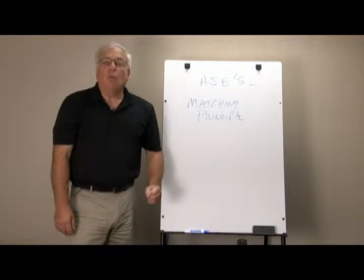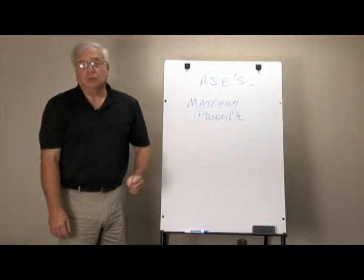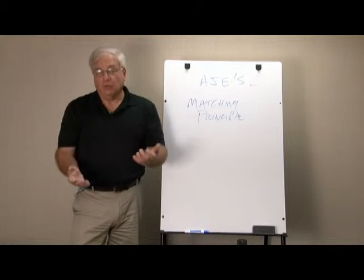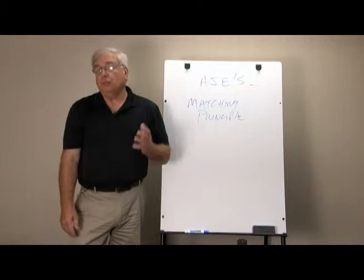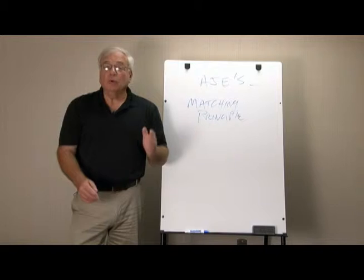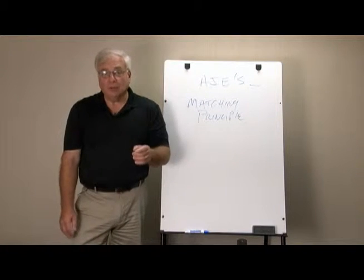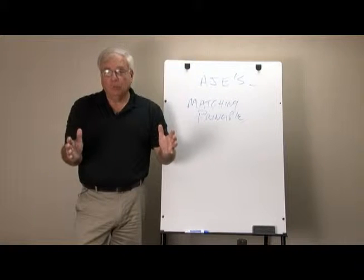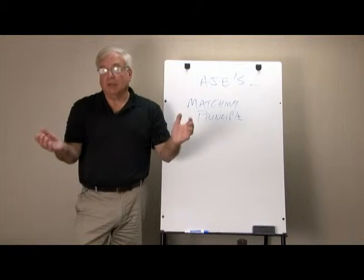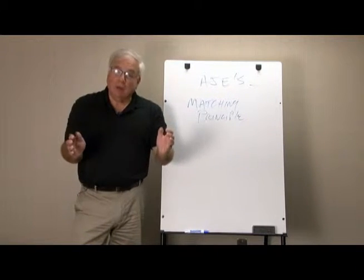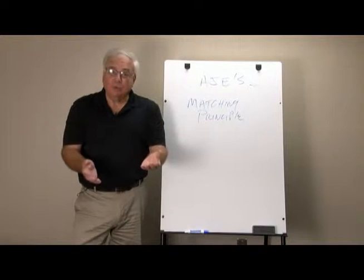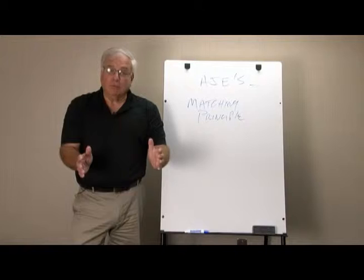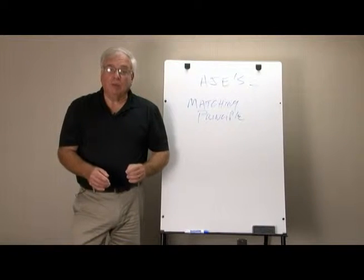The principle that drives why we have to do adjusting journal entries is called the matching principle. This is out of generally accepted accounting principles, and simply stated it says: in order to determine the net income correctly, we have to make sure we have all of the revenue earned during a period of time, whether it's been received in cash or not, matched up with all the expenses that were used during that period while we were generating the revenue. If we have everything in, we have a good net income number.